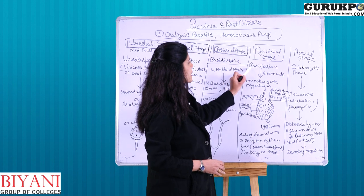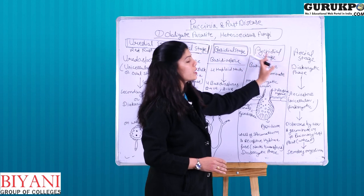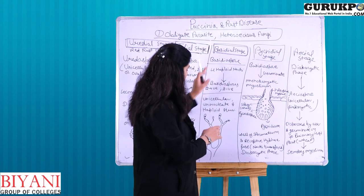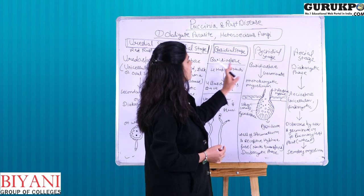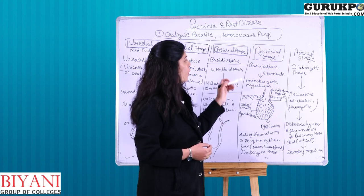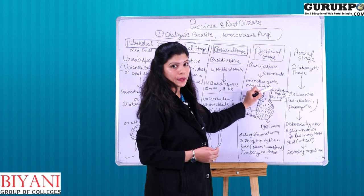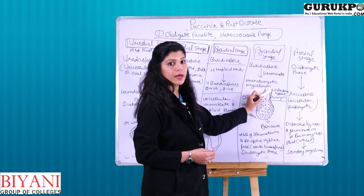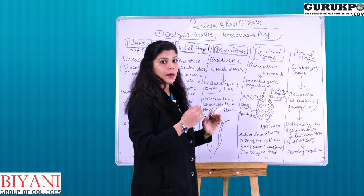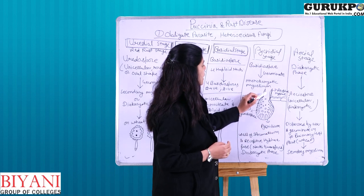So the uredial stage, telial stage, and basidial stage are completed on the wheat plant, and the last two stages — pycnidial and aecial — are completed on the barberry leaves. In the basidial stage, basidiospores are dispersed through air and land on barberry leaves where they germinate. Since basidiospores are haploid, the resulting mycelium is monocaryotic. This monocaryotic mycelium develops under the upper epidermis of the barberry leaf into a flask-shaped structure called a pycnidium.